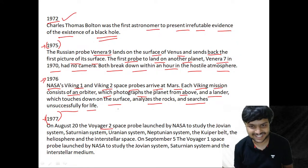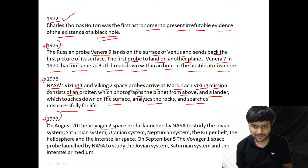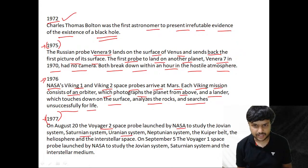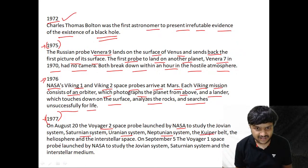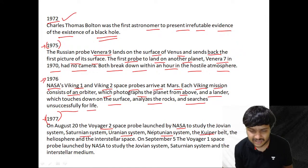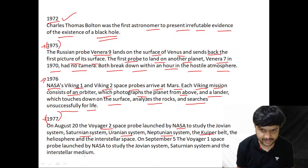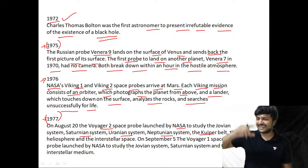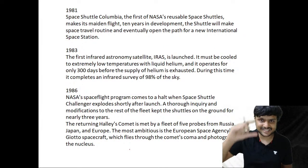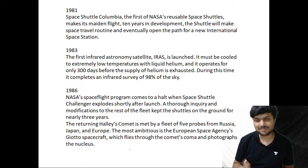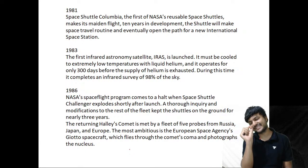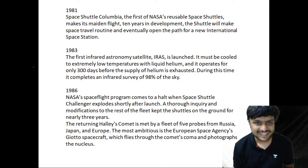In 1977, Voyager 2 was launched by NASA to study the Jovian, Saturnian, Uranian, and Neptunian systems, the Kuiper Belt, the heliosphere, and interstellar space. On September 5th, Voyager 1 was launched to study the Jovian and Saturnian systems and interstellar medium. At the end of its journey, Voyager took a photograph of planet Earth and we appeared as a single pixel — a pale blue dot — in the sky.